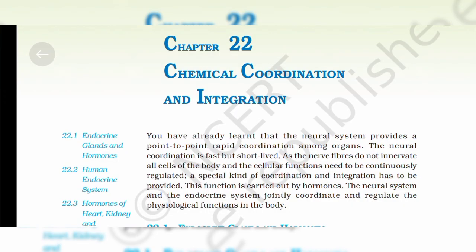Chapter 22: Chemical Coordination and Integration. You have already learned that the neural system provides point-to-point rapid coordination among organs. Neural coordination is fast but short-lived, as nerve fibers do not innervate all cells of the body, and cellular functions need to be continuously regulated. A special kind of coordination and integration has to be provided — this function is carried out by hormones. The neural system and the endocrine system jointly coordinate and regulate the physiological functions in the body.